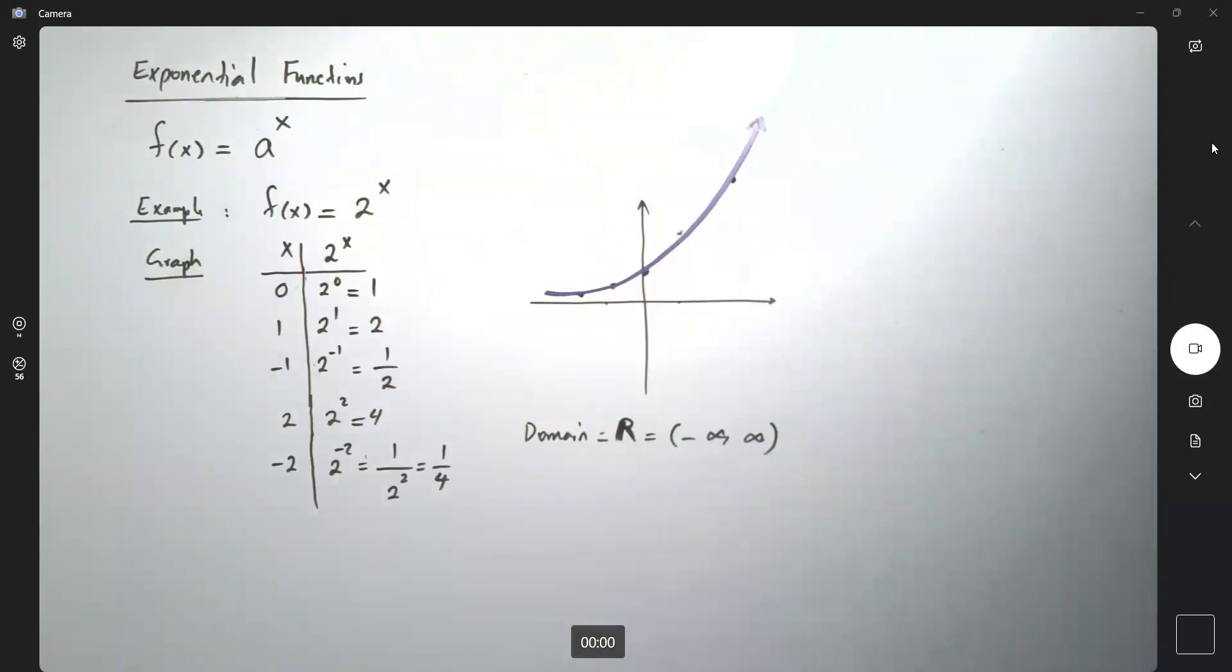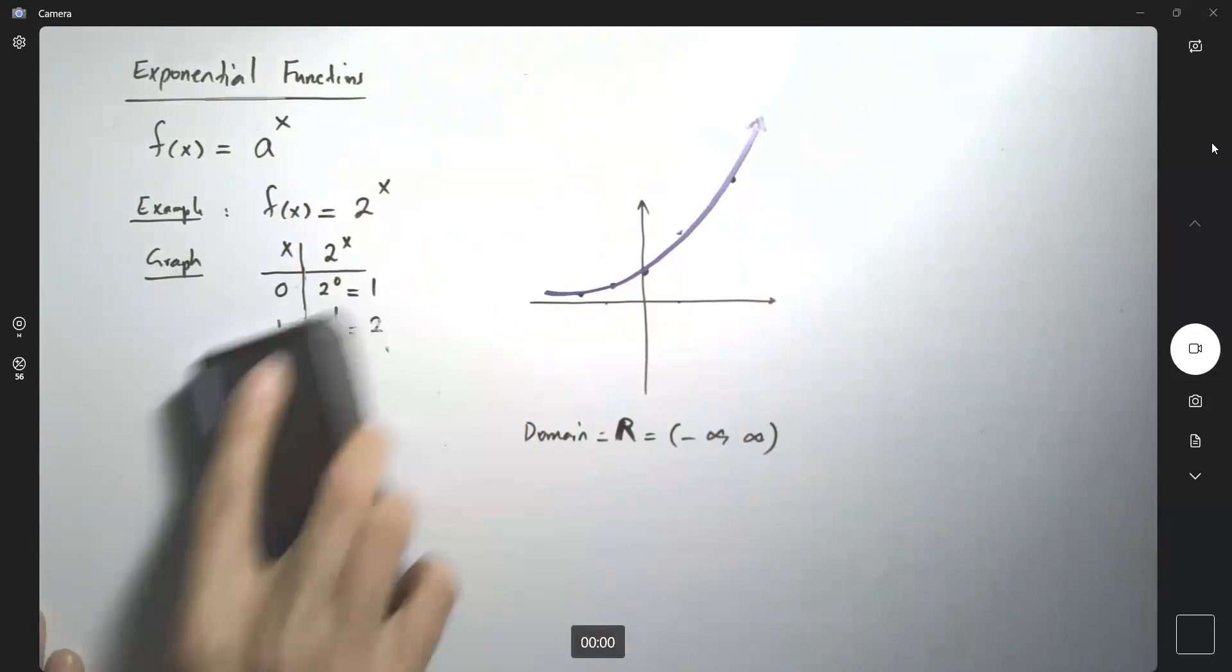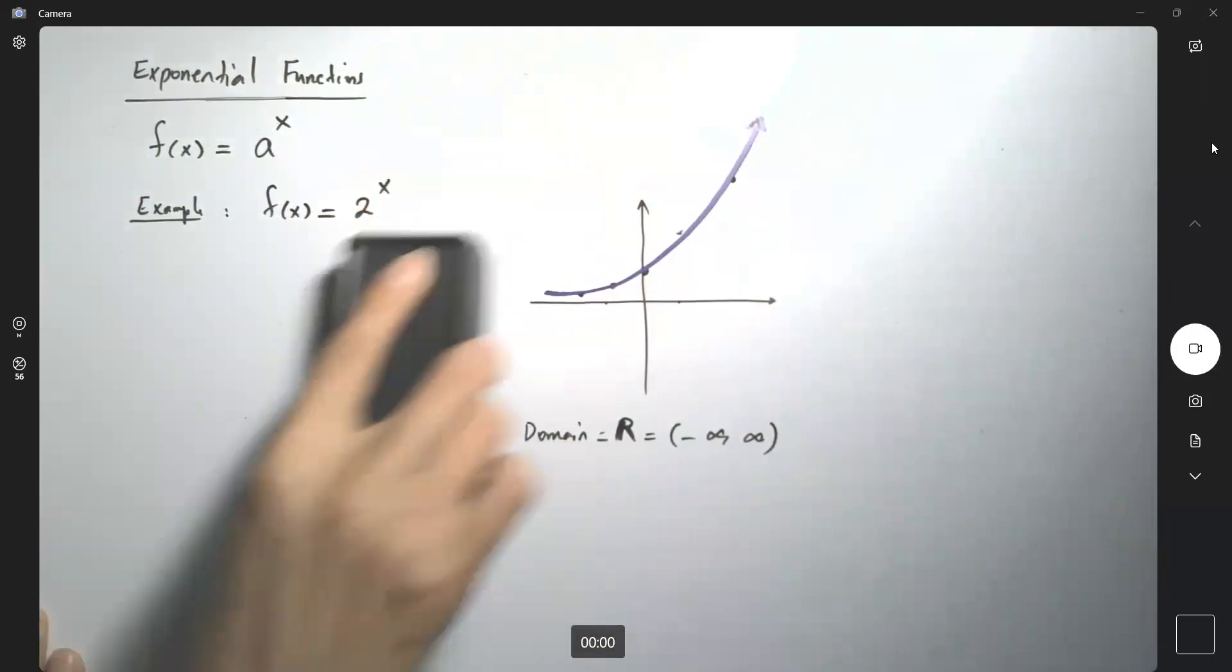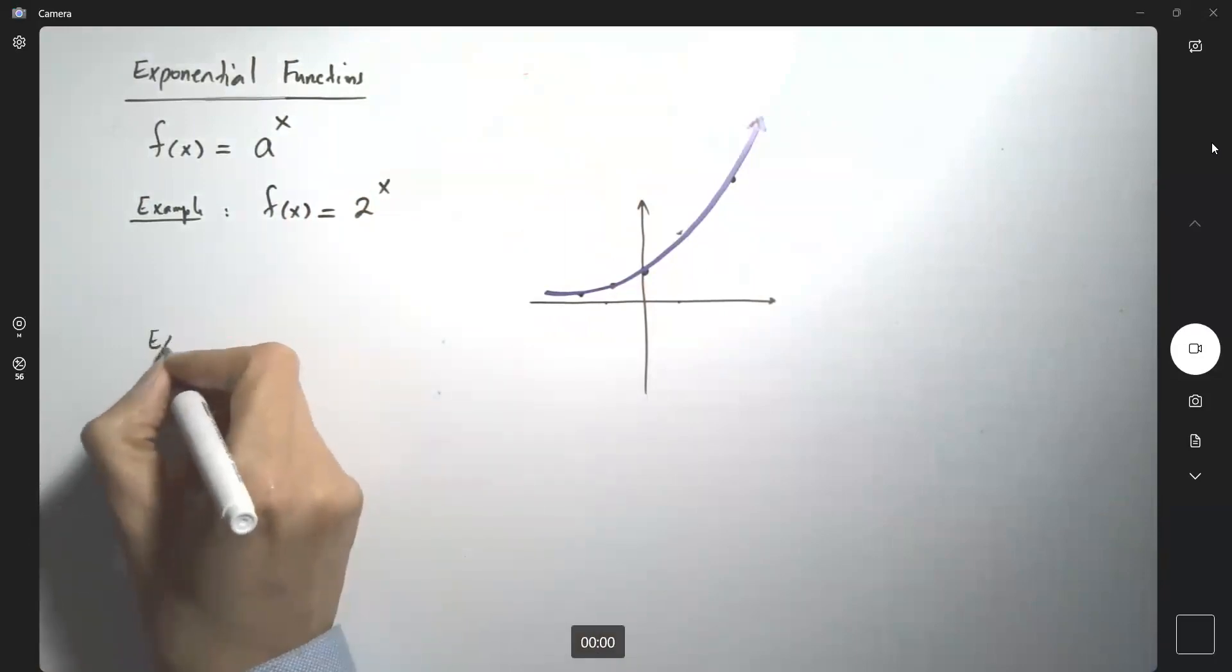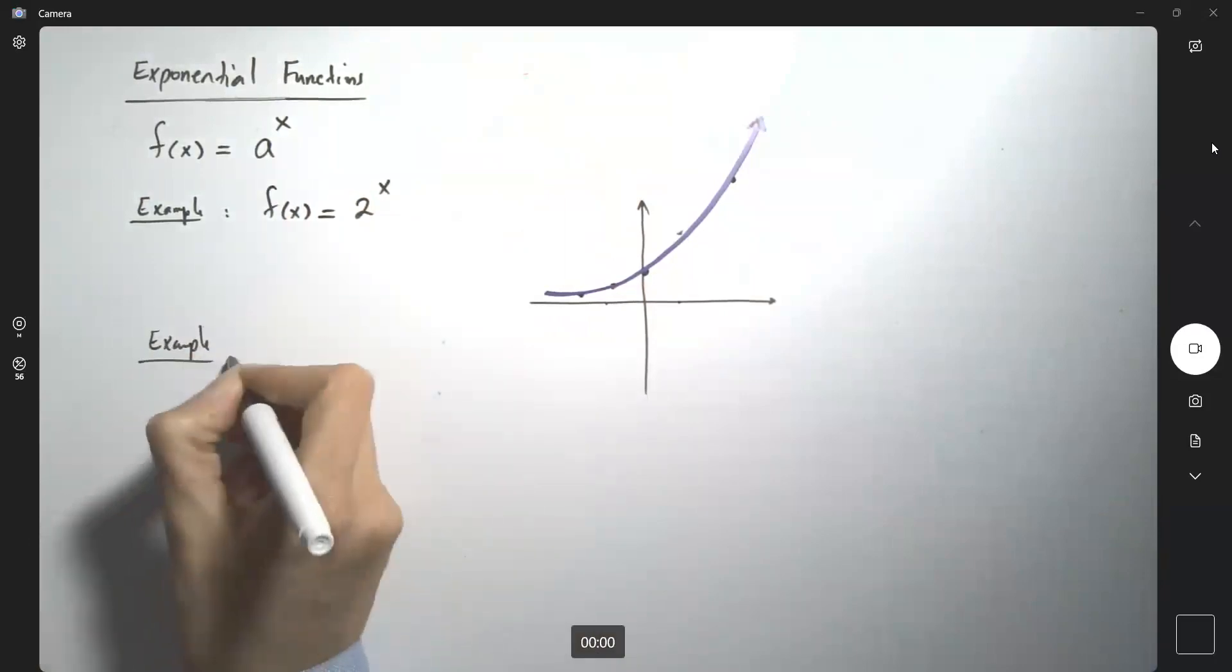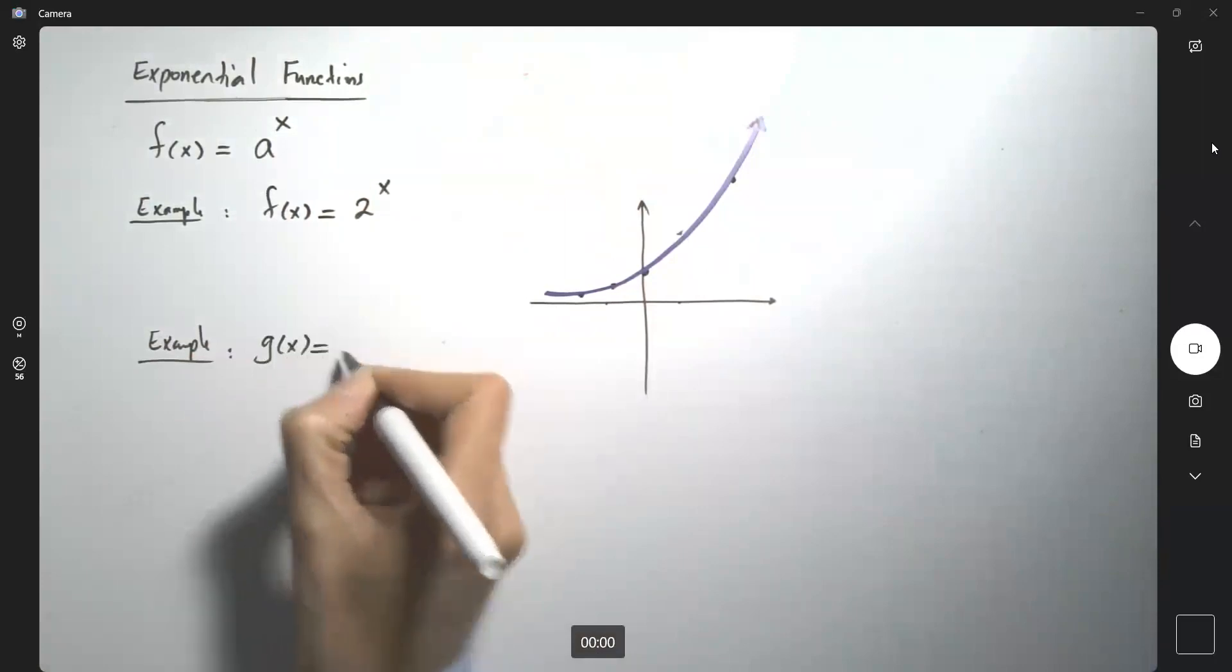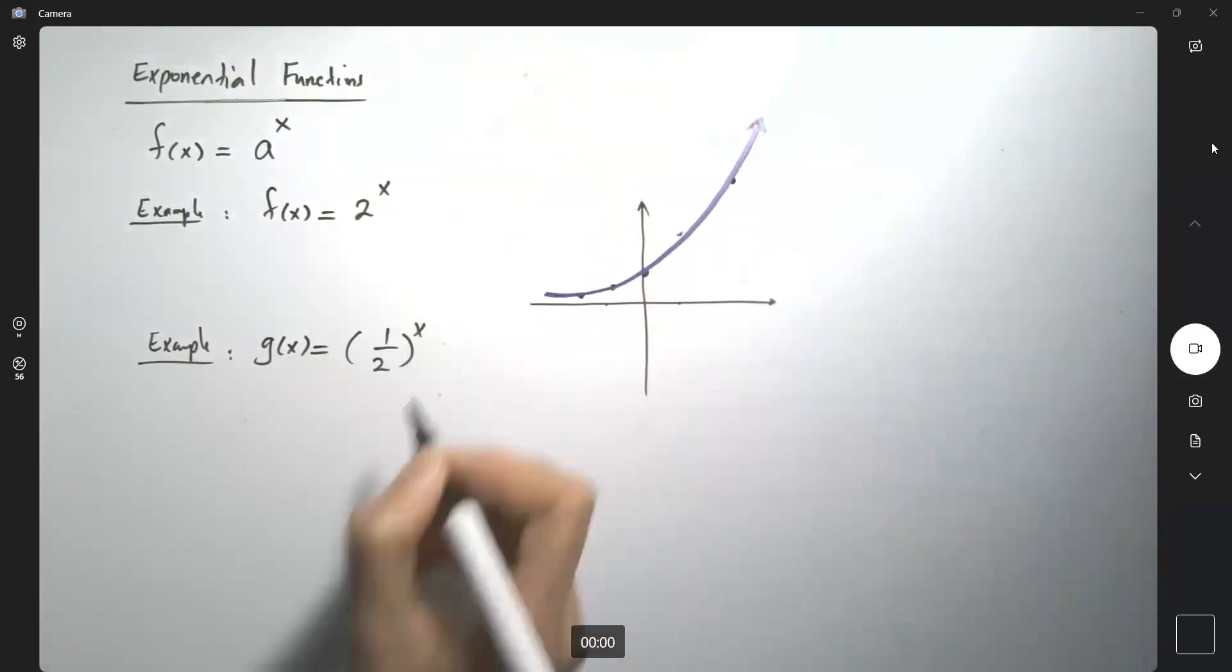What happens if I ask you to graph this function now? What happens if I ask you to graph g(x) = (1/2)^x? You have 2^x, an increasing function.